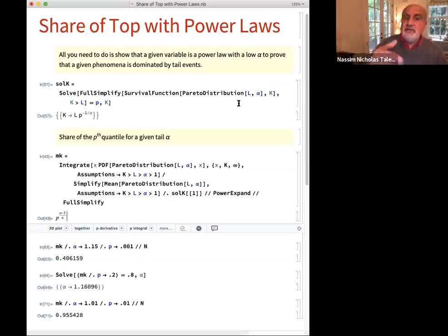So probability of exceeding K threshold is P, and you can pull out the threshold because luckily with power laws we can do an inverse, a closed form inverse survival function. Survival function mean again the probability of exceeding a certain threshold.